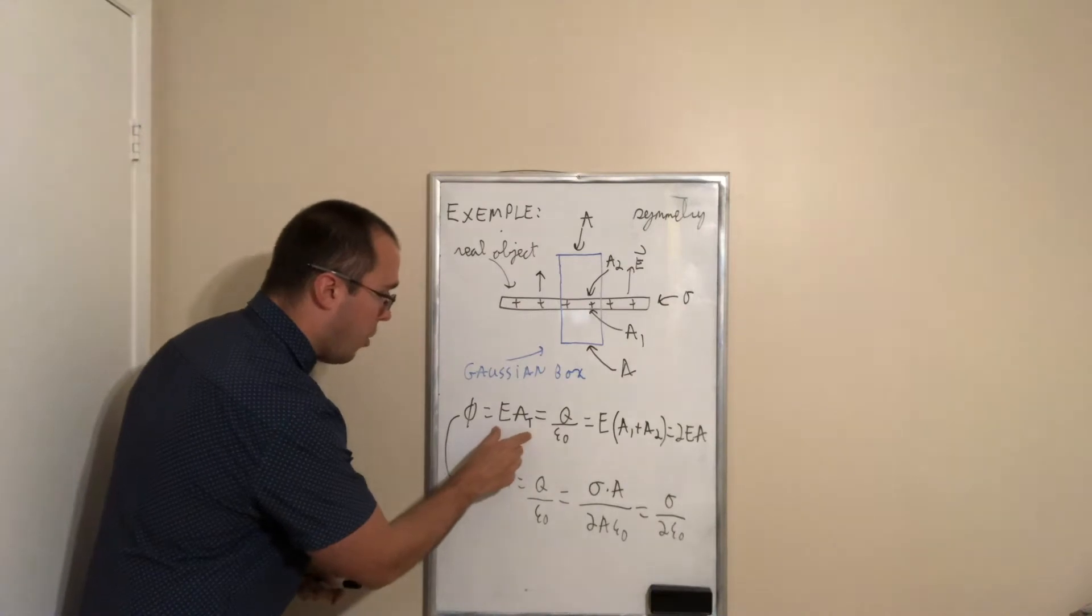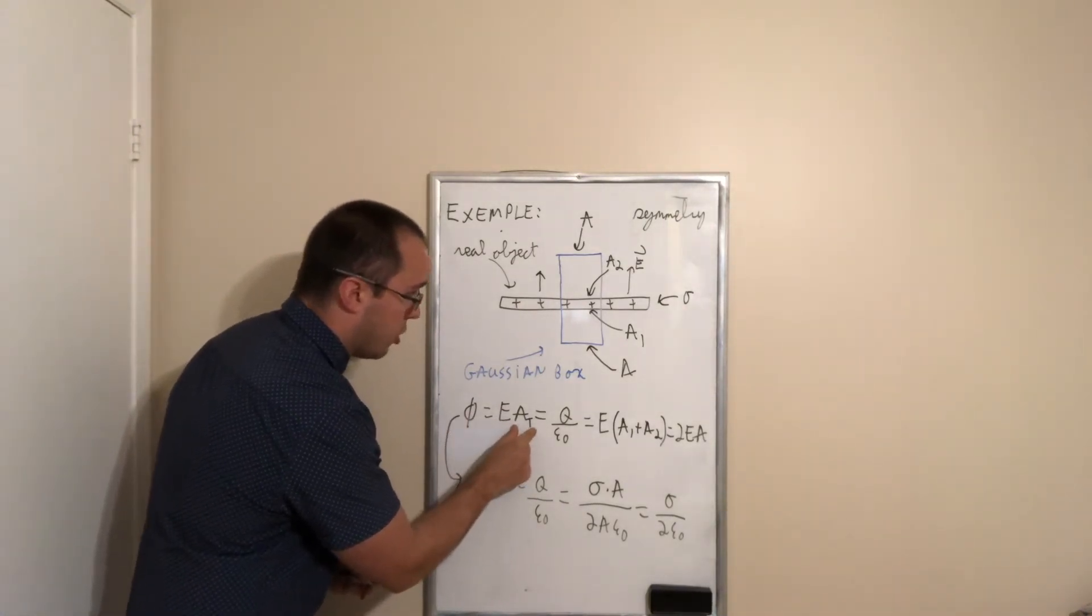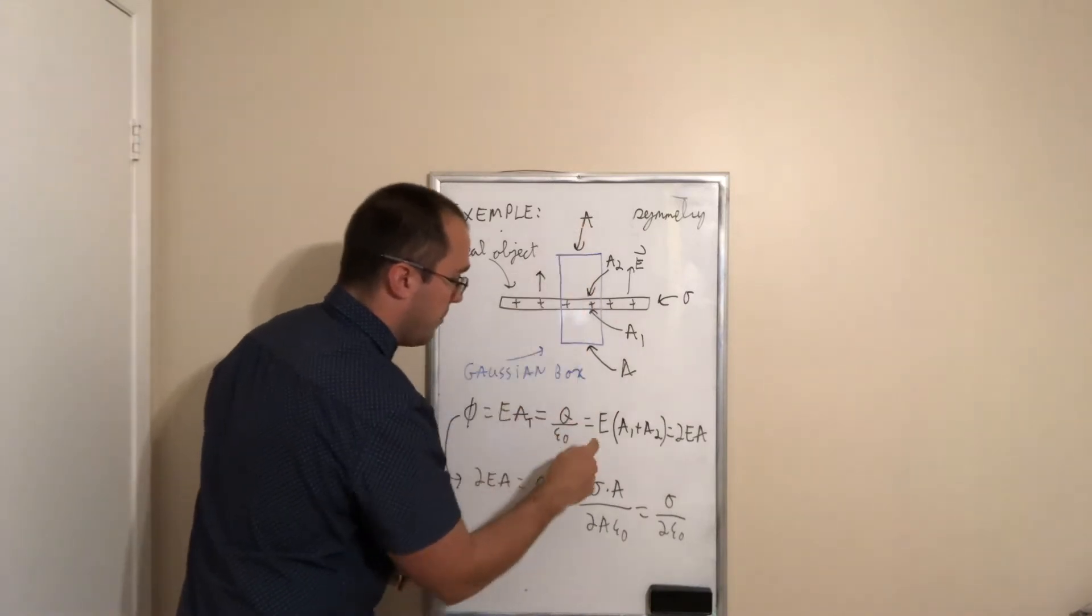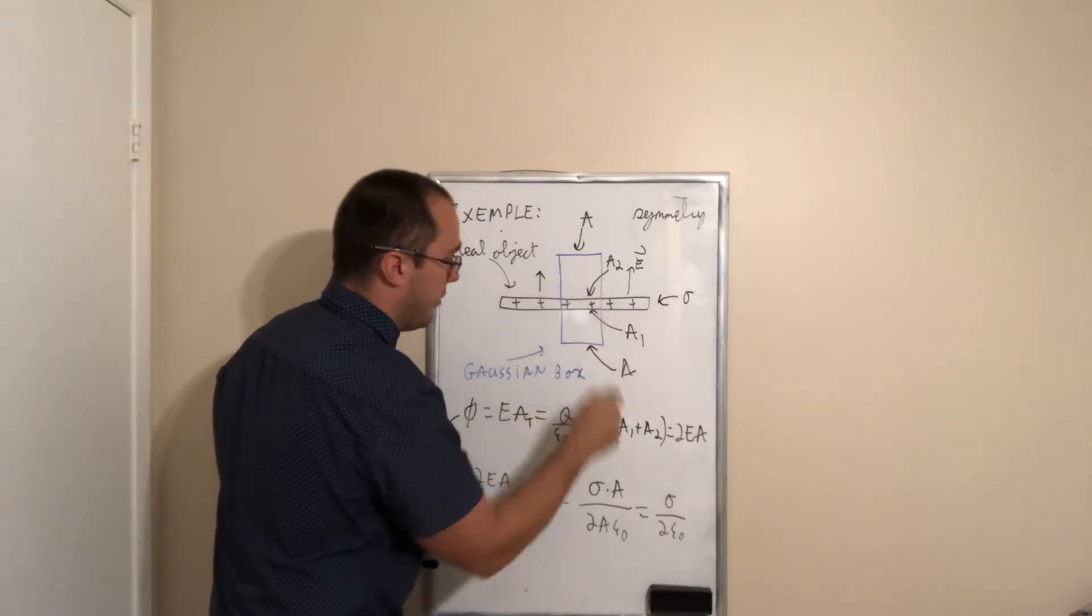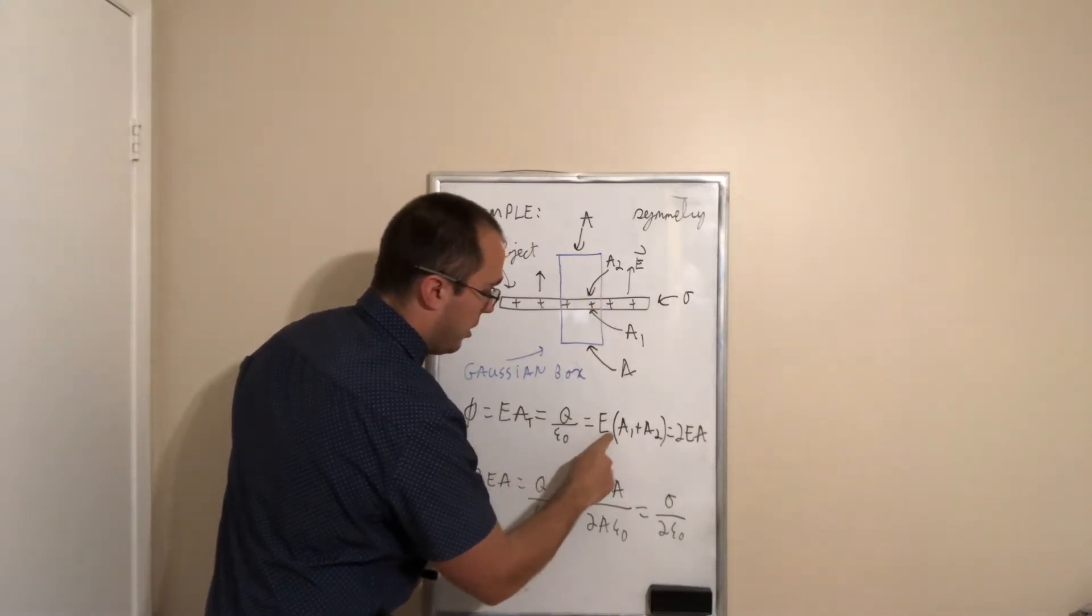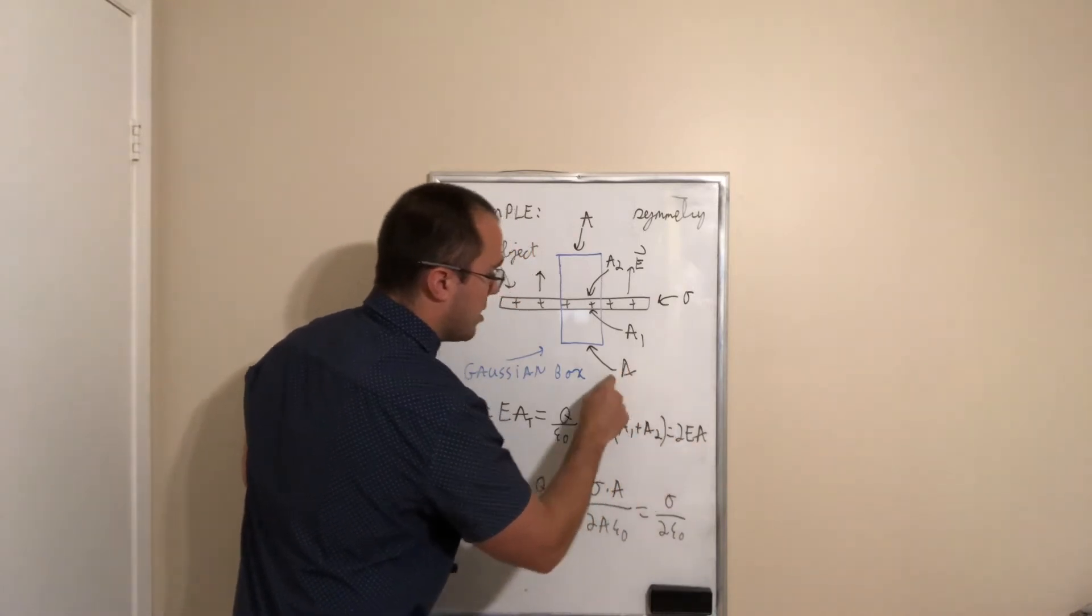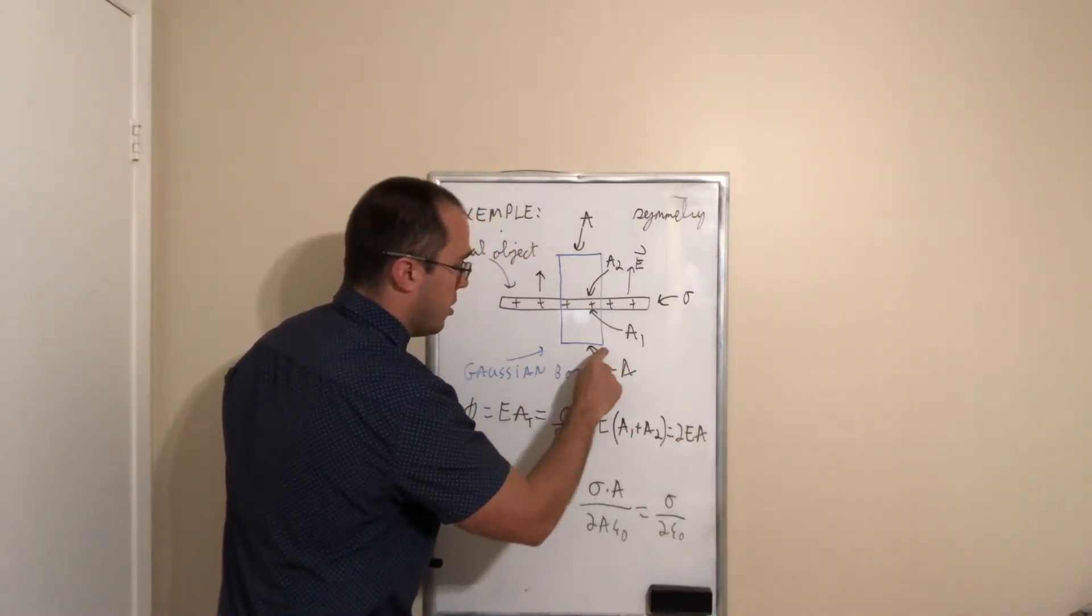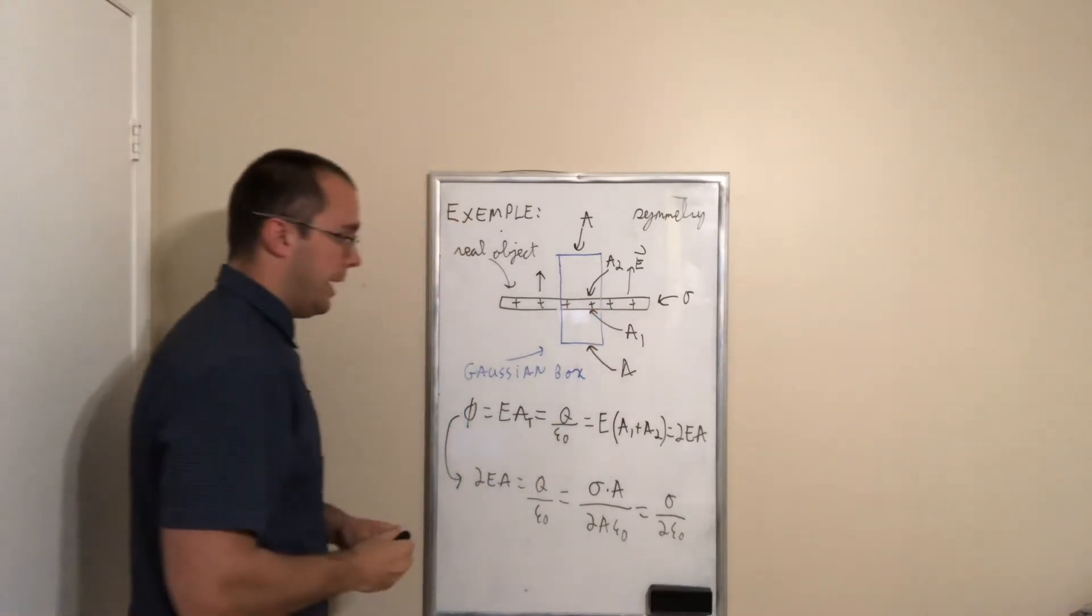So, that means now, total flux is equal to electric field multiplied by the total area, which will be A plus A. So, this also matches the area on both sides of the plane. So, electric field multiplied by A1 plus A2 is equal to 2EA because this area for Gaussian surface has to match the area here on the plane.